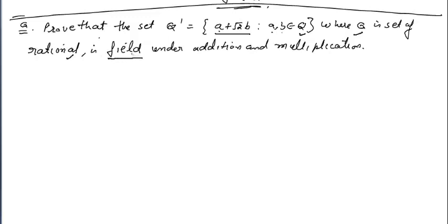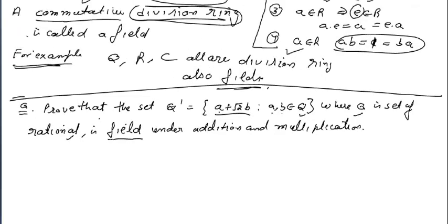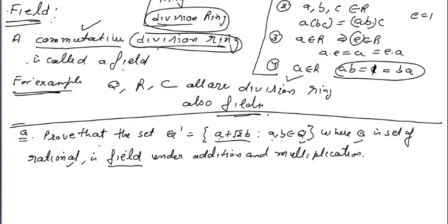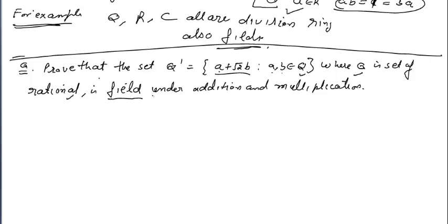This is a very important question. Because if you go through the definition we discussed in the last class, a commutative division ring is a field. So you must know the meaning of division ring. We already discussed this — it must be a ring and it must not have any proper zero divisor. In this question you will understand what the main properties are required to verify whether any set is a field or not.